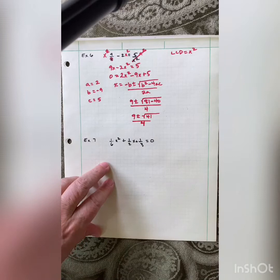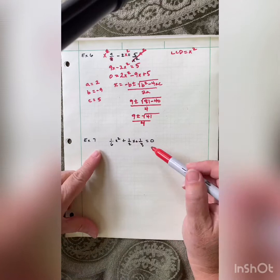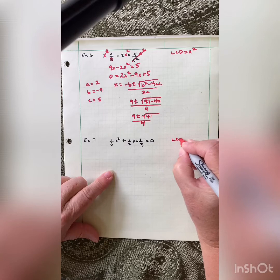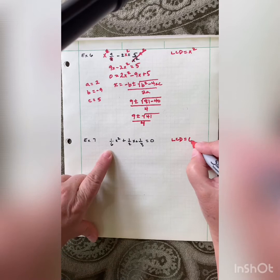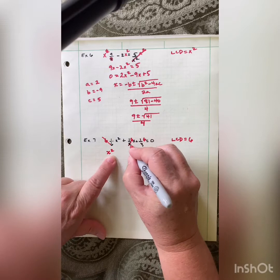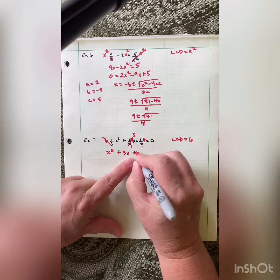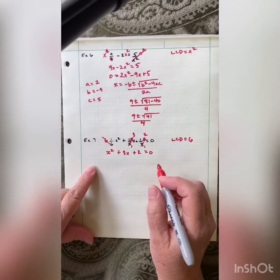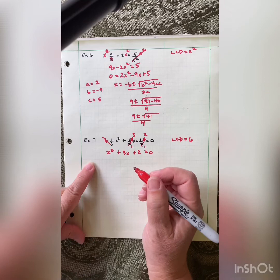This next one has fractions — I've seen people do some pretty crazy stuff sticking fractions into the quadratic formula. That seems like a nightmare. Let's clean this up first by multiplying through by the LCD, which is 6. Multiply every term by 6: those cancel leaving x squared, this becomes 3x, plus this becomes 2 — so x squared plus 3x plus 2 equals 0. Doesn't that look a lot easier? Highly recommend you don't use fractions in the quadratic formula. Identify A, B, and C: 1, 3, and 2.